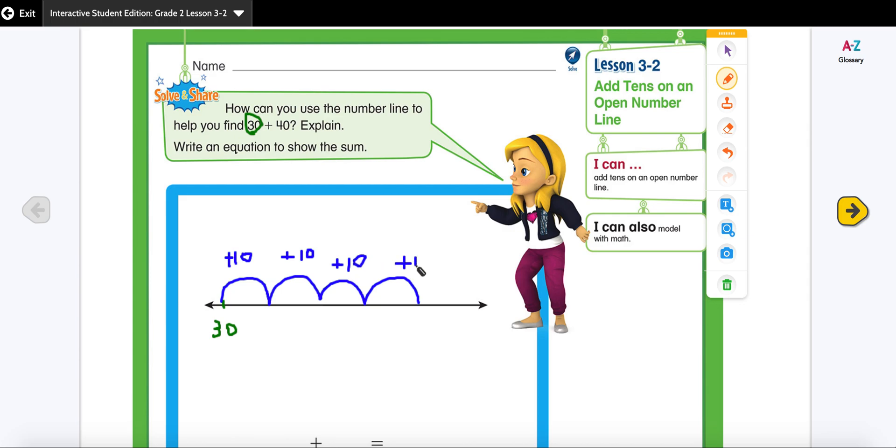I'm going to double check my work whether I have the right amount of tens to add. So I have I started with 30 and then I have to add 40. So 10, 20, 30, 40.